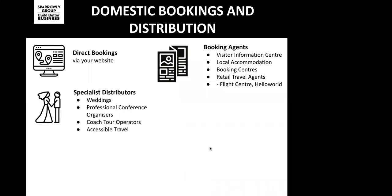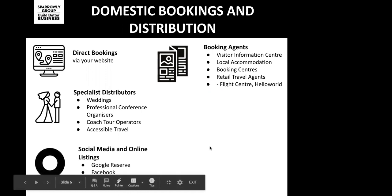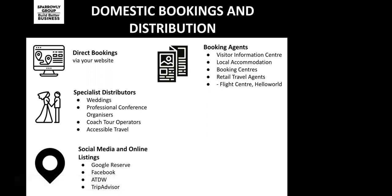There are also specialist distributors — niche providers that support different parts of the sector, like weddings, conferences, events, accessible tourism, and group tourism, so you might want to look at these if you work in those markets. Then we've got social media and online listings. All tourism businesses should have a Google My Business listing and an ATDW or Get Connected listing if you're in New South Wales. Facebook and Instagram are key social channels for tourism businesses, and these platforms are now shifting into e-commerce — you can actually book products and experiences through Google Reserve, Facebook, and Instagram. Other listing sites can connect through booking platforms or back to your website to expand your distribution.